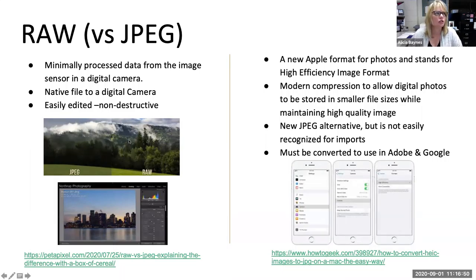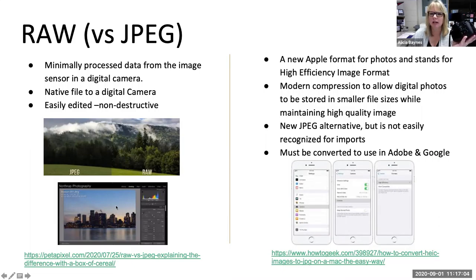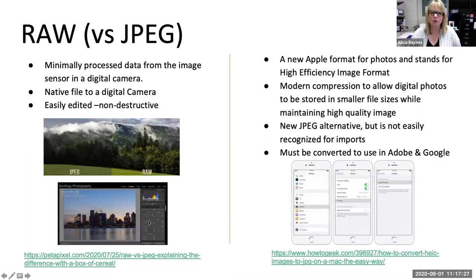RAW is a native file that comes from a digital camera. You can see there's a clarity difference between JPEG and RAW. Most cameras can shoot both JPEG and RAW. You can edit photos similar to how you would in Adobe Lightroom or Photoshop — they call that non-destructive. When you open a RAW file, you get sliders to adjust exposure, make it black and white, all without going to a separate application or re-saving a file.